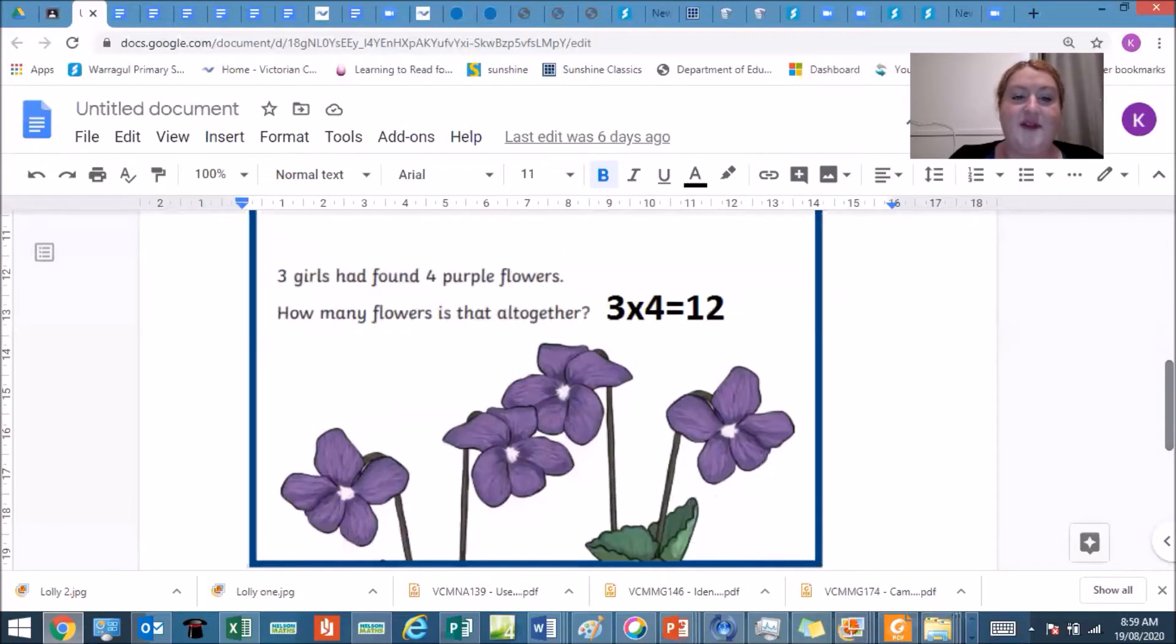So three girls had found four purple flowers. How many flowers is that altogether? So here we have the three girls. Now each girl has four flowers, so all together that equals twelve. So four, eight, twelve. So here is my word problem.